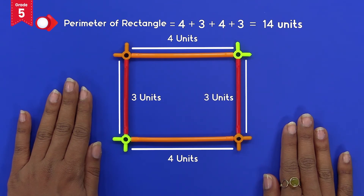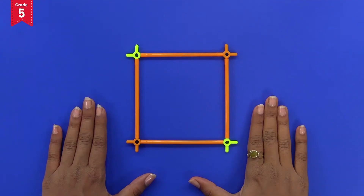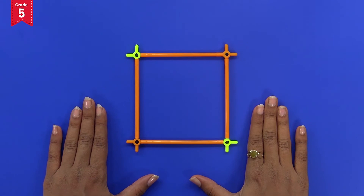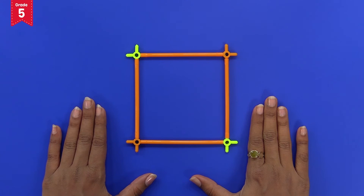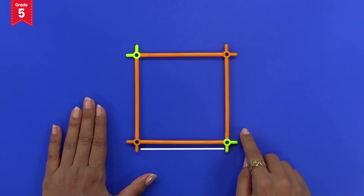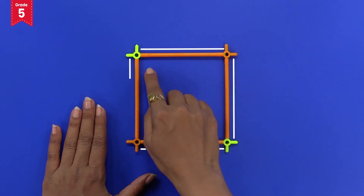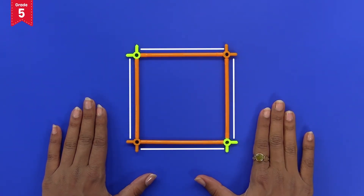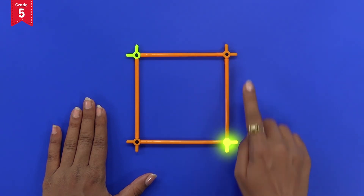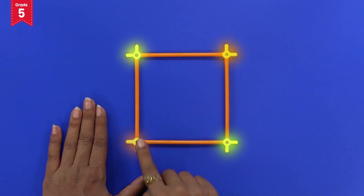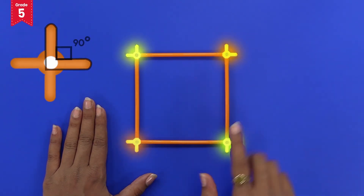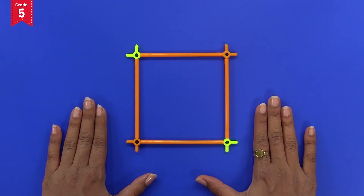Now you can try finding the perimeter and deriving the formula for a square shape using the same steps. We built this square shape using four pipes of equal length, because all the sides of a square are equal, and using four four-arm connectors with arms inclined at 90 degrees. Let's calculate its perimeter.